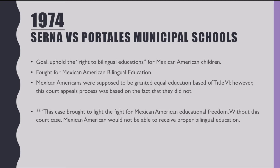The next case is Serna v. Portales Municipal Schools, which took place in 1974. Its goal was to uphold the right to bilingual education for Mexican-American children. Mexican-Americans were supposed to be granted equal education based on Title VI of the Civil Rights Act, but this court appeals process was based on the fact that they did not receive it. This case brought to light the fight for Mexican-American educational freedom. Without this court case, Mexican-Americans would not have been able to receive proper bilingual education.